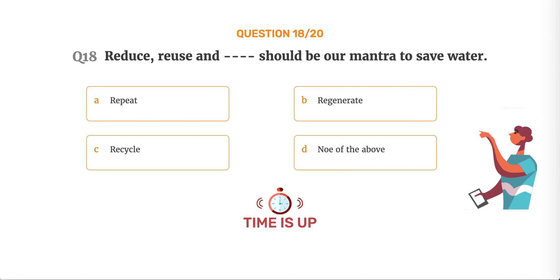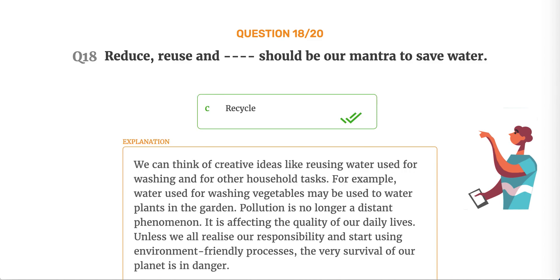The correct answer is Option C, Recycle. We can think of creative ideas like reusing water used for washing for other household tasks. For example, water used for washing vegetables may be used to water plants in the garden. Pollution is no longer a distant phenomenon — it is affecting the quality of our daily lives. Unless we all realize our responsibility and start using environment-friendly processes, the very survival of our planet is in danger.